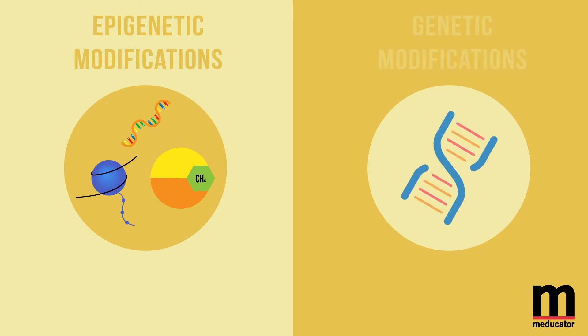What separates epigenetic modifications from genetic modifications is that epigenetic modifications are reversible. Several mechanisms exist to replace methylated cytosine molecules with unmethylated ones. Mechanisms also exist to inhibit maintenance DNMTs from replicating methylation patterns as the cell divides.